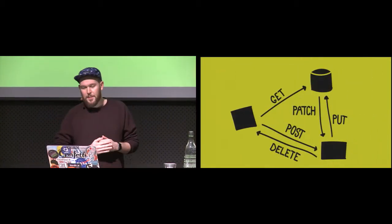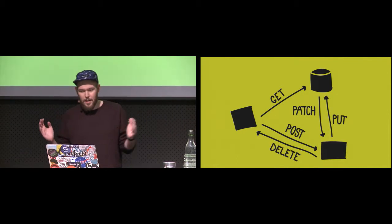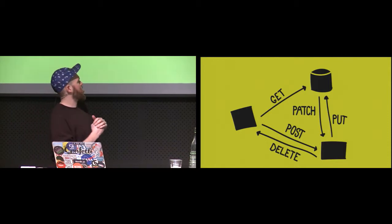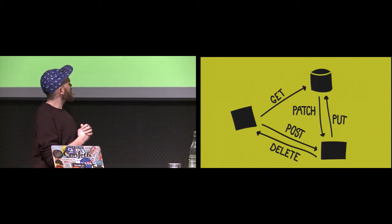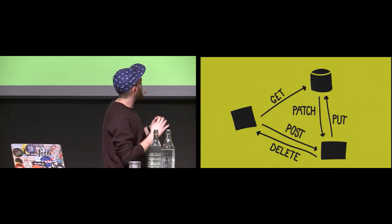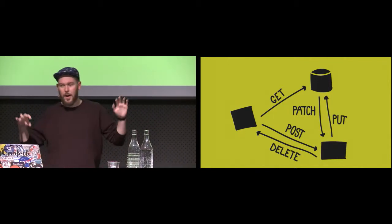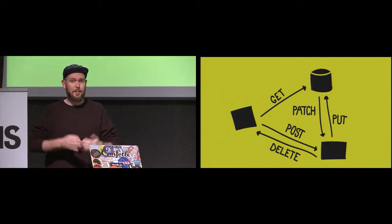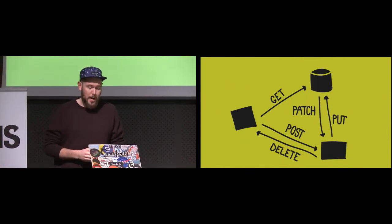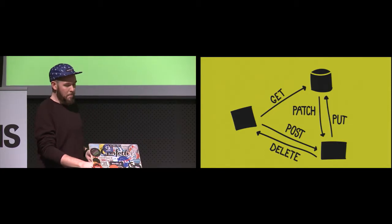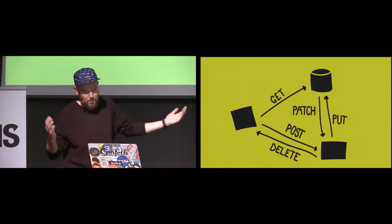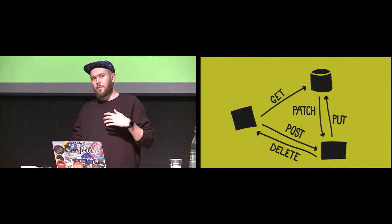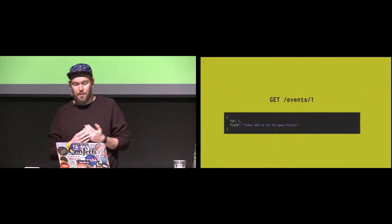Let's imagine we have our everyday REST API — Representational State Transfer API. We use our fancy HTTP verbs to send stuff around and modify different resources. We may sit down and start to design this API: how do we want it to look, how do we want it to work? Let's say we're building an event platform. We want to represent an event in JSON, so we start out like this.